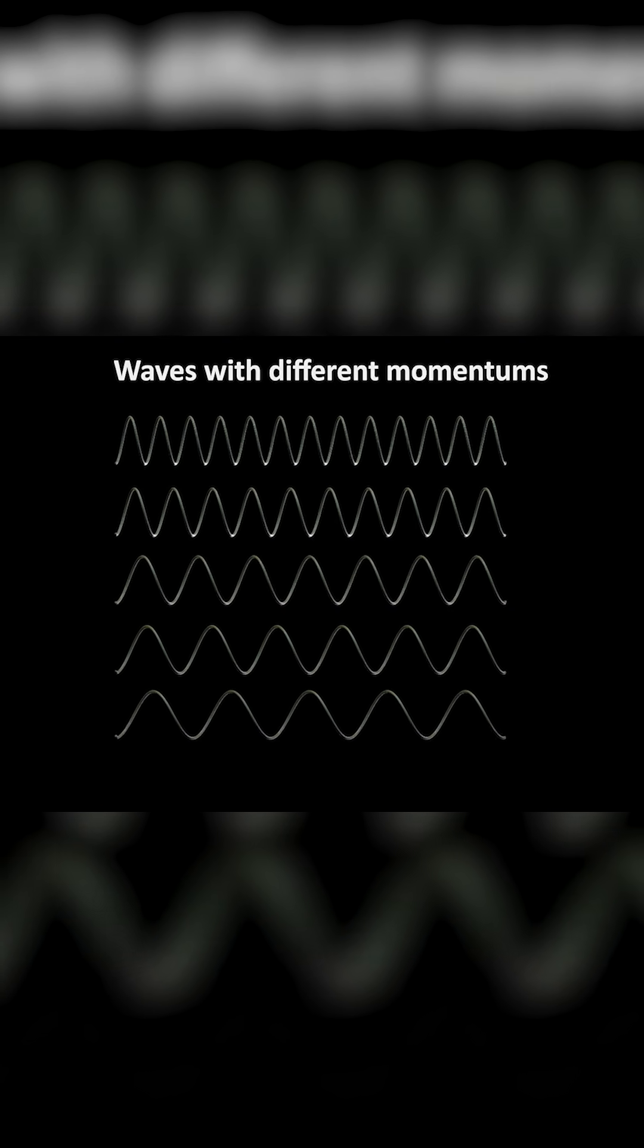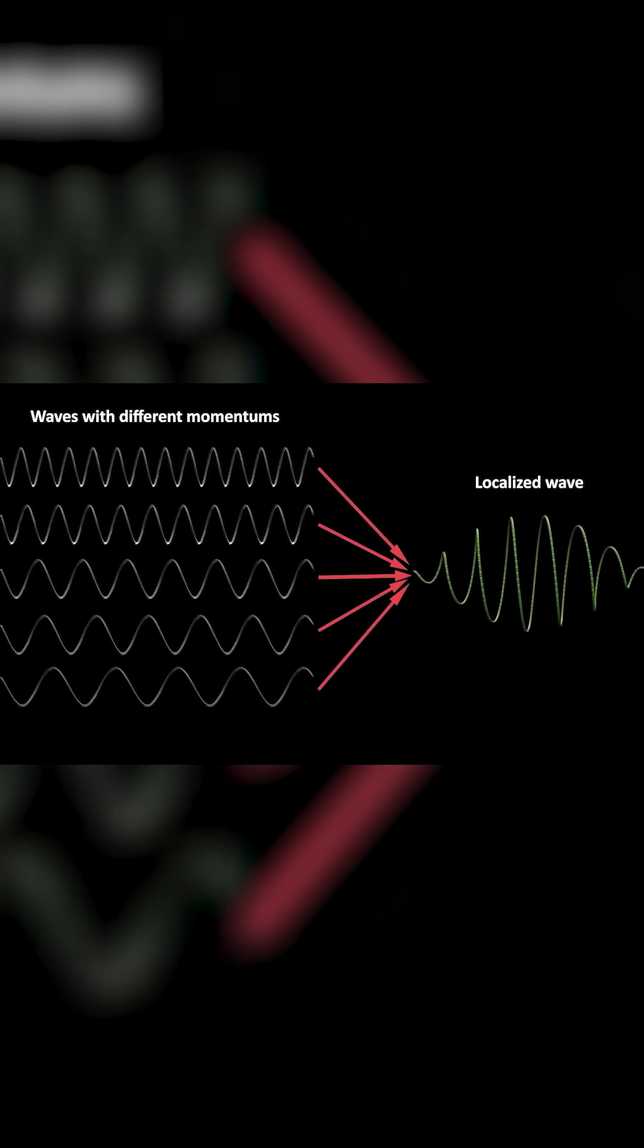On the other hand, if we want to know the position of the electron precisely, we would need to add many waves of different wavelengths so that we can get an interference pattern. This creates a more localized wave, which would give us a more precise location.